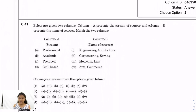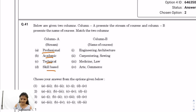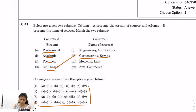Question 41: Use elimination method — you don't need to find every answer, just eliminate wrong options. Skill-based would be car painting and sewing. Looking at the options, D maps to 2. The correct option is option 4: A3, B4, C1, D2.